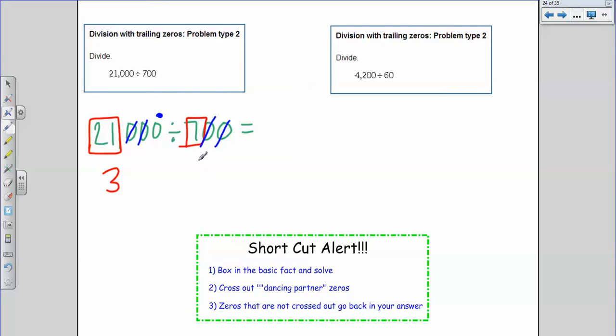So we've crossed out our dancing partner zeros. Zeros that are not crossed out go back in our answer. So how many zeros are going to be in my final answer? 1. So my final answer is 30.